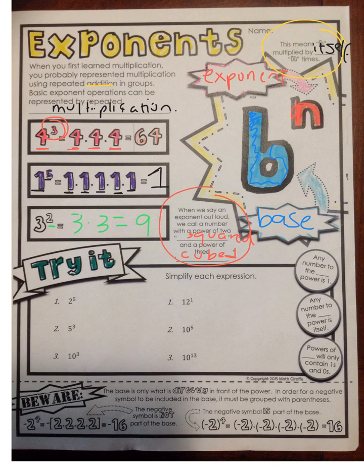Let's take a look at the 'try it' down below. 2 to the fifth power — the base is 2, and we are going to multiply it by itself five times. 2 times 2 is 4, 4 times 2 is 8, 8 times 2 is 16, 16 times 2 is 32.